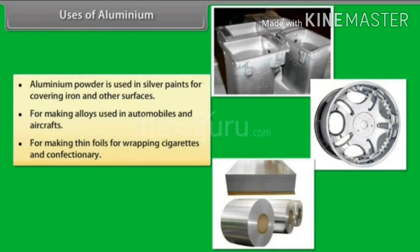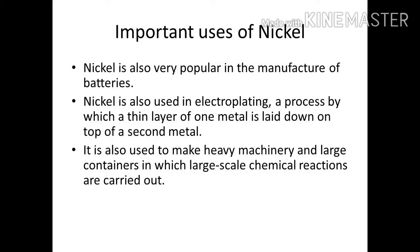Where copper is not used, aluminium can be used because it can also transmit electricity. Aluminium is used for cooking utensils and making electrical cables. Foil paper made from aluminium can be used to wrap food, cigarettes, and medicines. These are the uses of aluminium.